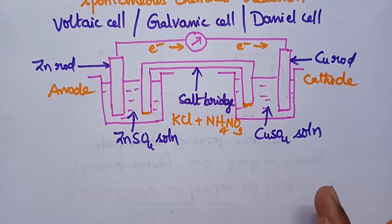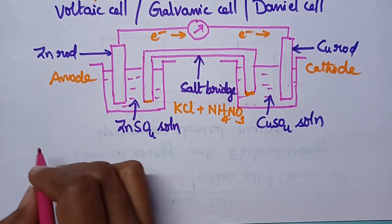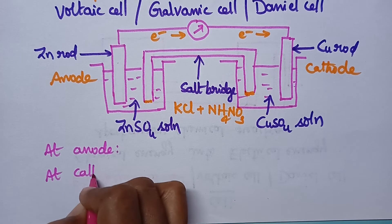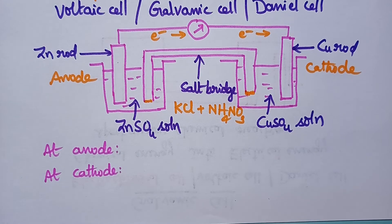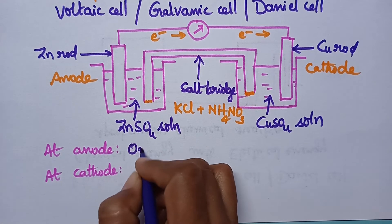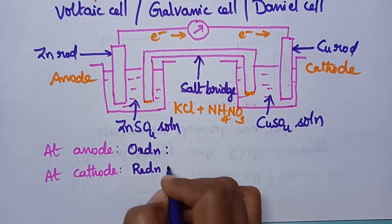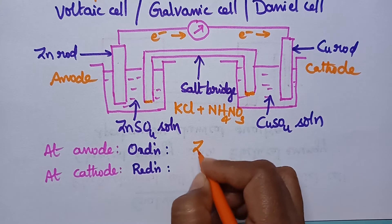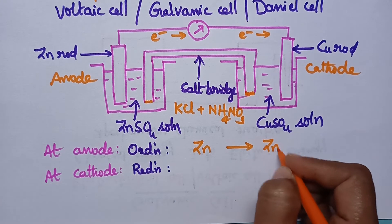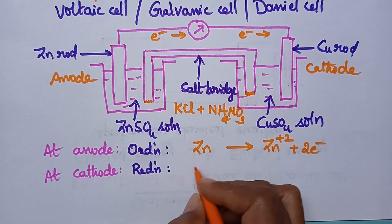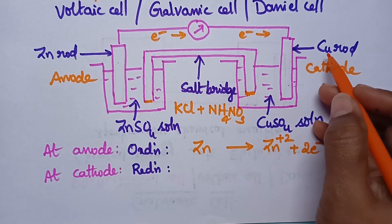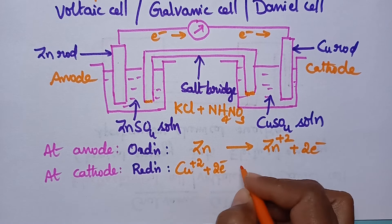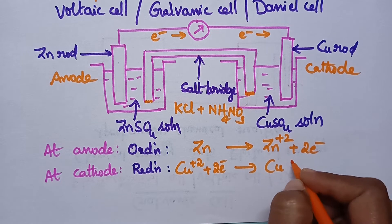Coming to the reactions occurring at the galvanic cell: at the anode, oxidation takes place, and at the cathode, reduction takes place. The zinc rod acts as the anode and hence zinc undergoes oxidation. Oxidation means loss of electrons. Reduction means gain of electrons. The copper rod acts as the cathode, and hence copper ions gain two electrons and get converted into copper metal.